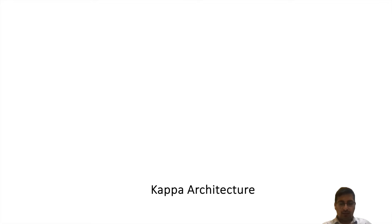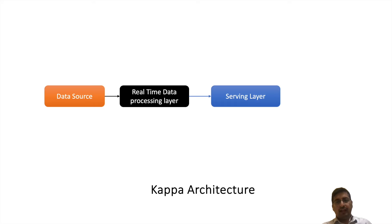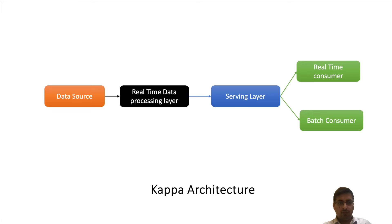Kappa architecture tries to fix these problems. It is an evolution from Lambda architecture. You have a source system, and there is a single real-time data processing layer. As soon as data is available it is processed by that layer, the output is put into a serving layer, and both batch consumers and real-time consumers consume data from that single serving layer. Kappa architecture does not maintain different processing layers for batch and real-time data — a single layer handles both.